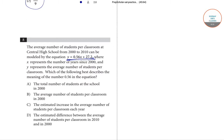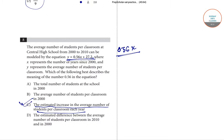In the equation, 0.56 × x where x represents the number of years represents the change in average number of students. So 0.56 is the estimated increase per year in the number of students. Hence option C, which says the estimated increase in the average number of students per classroom each year is represented by the 0.56 term, is the correct option for question number 8.